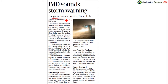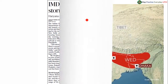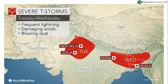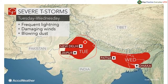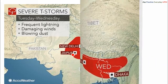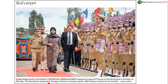IMD sounds storm warning — Haryana shut schools in Panchkula. Not only Haryana, but parts of Delhi, Punjab, and Rajasthan were also hit by this thunderstorm yesterday evening and night, with winds at a speed of 60 to 70 km per hour. Jammu Kashmir Chief Minister Mehbooba Mufti is inspecting a guard of honour at the secretariat in Srinagar.